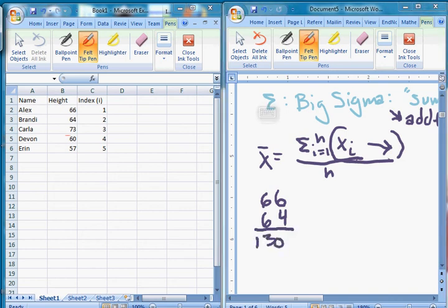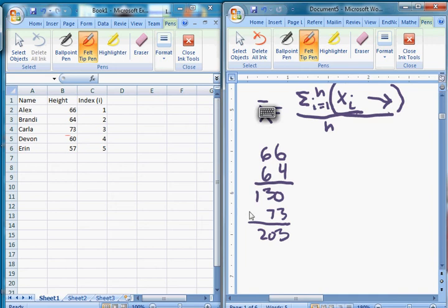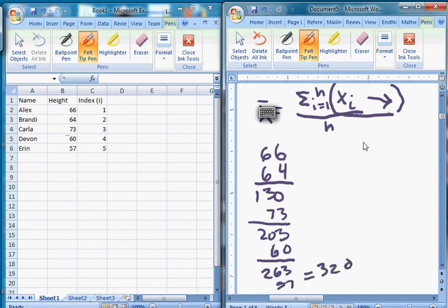Call up the next person, number 3, Carla will step up and we'll get another 73 inches of height. Add that to 203. Give myself a little more room down here. Call up number 4, get 60 inches, get up to 263. And if you add number 5, 57, we'll get up to 320. So that's the sum from i equals 1 to n of X sub i. That's how we start.